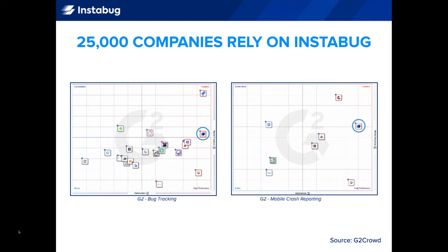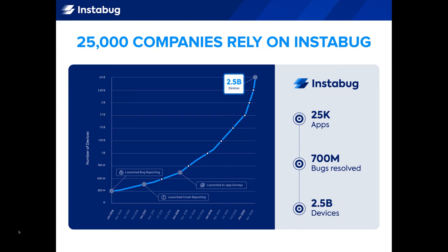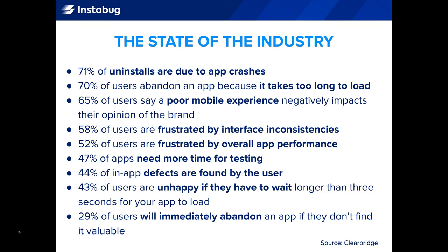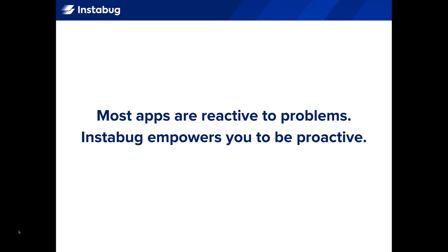When you look at the market, Instabug is the best-in-class solution for bug and crash reporting. To date, Instabug has touched about 2.5 billion devices through 25,000 apps with 700 million issues resolved. But we still have more work to do. There are billions of apps out there, and as we saw earlier, the bar is low when it comes to app quality. So Instabug is here to help.